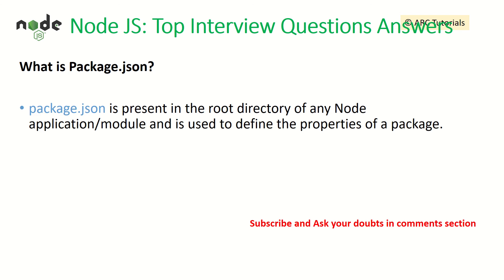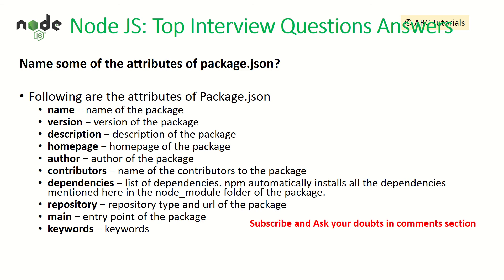What is package.json? package.json represents the root directory of any Node module and is often used to capture the properties of a package. If you want to see what modules or libraries your application is using, you can go to the package.json file and check the library names. Common attributes you would find in a typical package.json include: name, version, description, homepage, author, contributors, dependencies, repositories, main, and keywords.